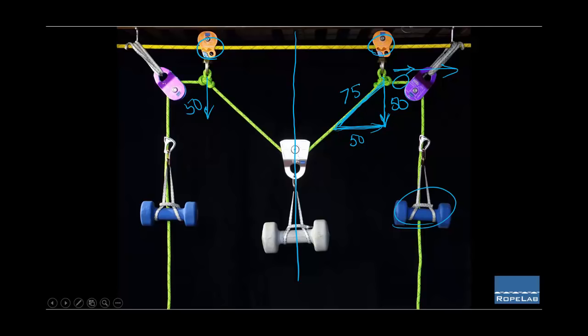So in this scenario, for 100 suspended on the system, we're going to have 75 units of tension in that strand and 75 in that strand. We've still got the 50 straight down on each anchor, but we've got the 75 in the anchor strands.